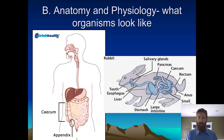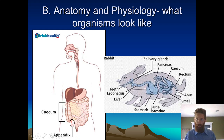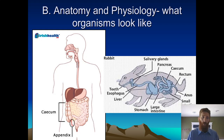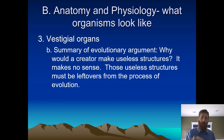The human appendix — classically cited as a vestigial organ. It's right where the small intestine meets the large intestine. If you look at other mammals like rabbits, they have a cecum — an enlarged pouch where the small intestine meets the large intestine. It's where there's a lot of bacteria that helps them digest the grass that they eat. Guess what's found in the appendix? A lot of good beneficial bacteria. So why is there beneficial bacteria in the appendix? Well, it's just kind of hanging out, leftover, not really needed. You can have your appendix removed and still go on and live a totally healthy, normal life. So why would a creator make useless structures? It makes no sense. Useless structures must be leftovers from the process of evolution.